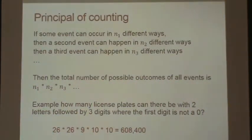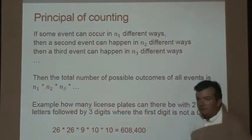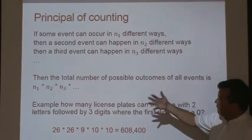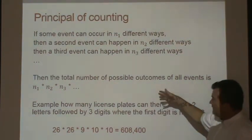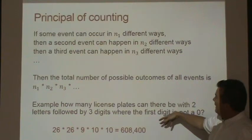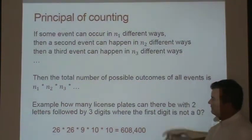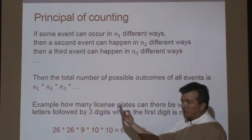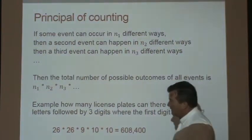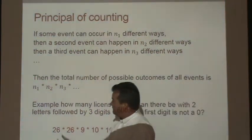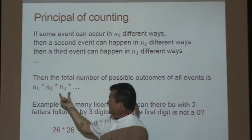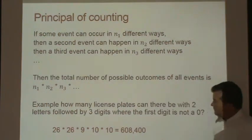The principle of counting is basically: suppose there's a sequence of events — event 1, then event 2, then event 3 — and each one is independent of the others. If you wanted to know how many different ways all those events can occur, it would be the number of ways event 1 can happen, times the number of ways event 2 can happen, times the number of ways event 3 can happen, and so on.